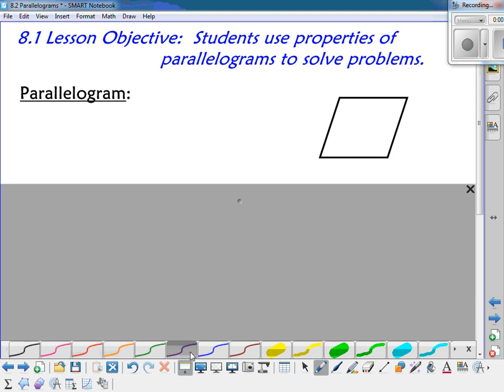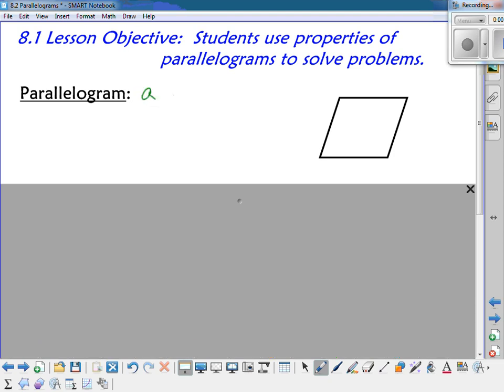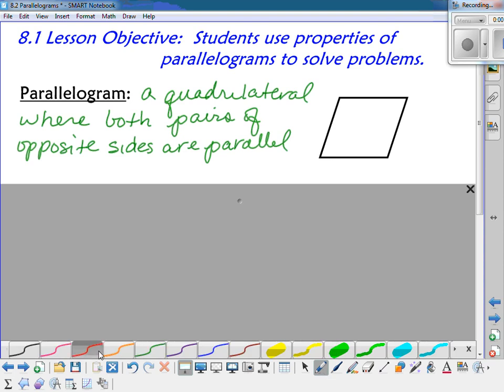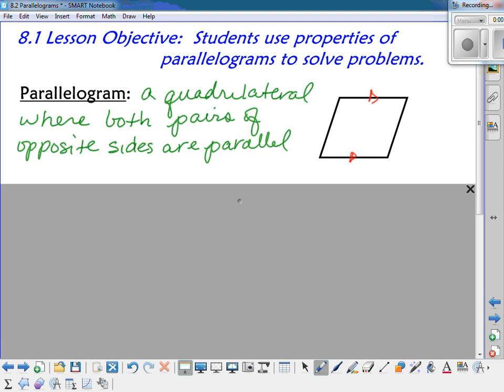The parallelogram is a quadrilateral where both pairs of opposite sides are parallel. So in my figure here, the top is parallel to the bottom and then the two sides would be parallel to each other also.